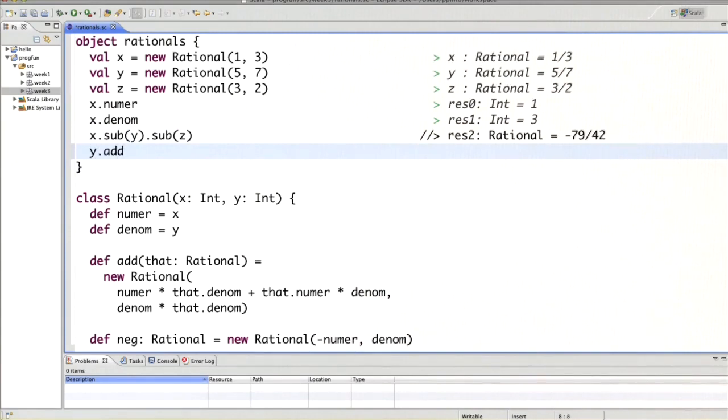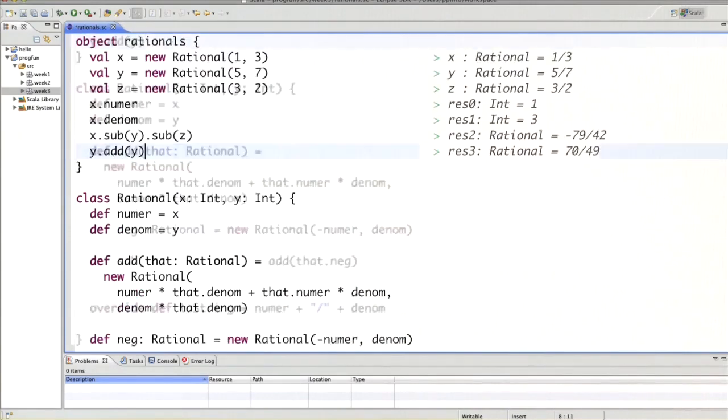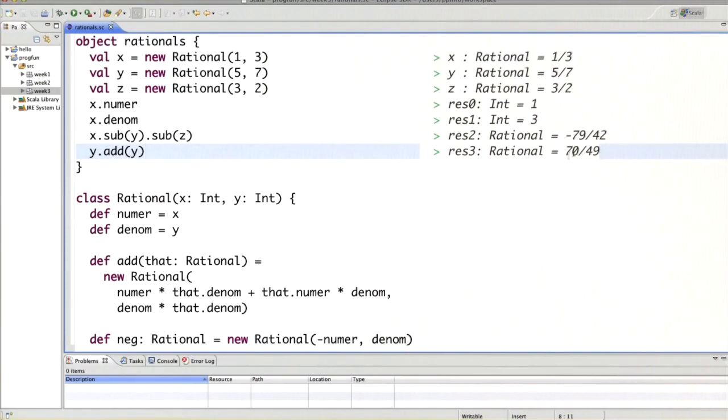We say y.add of y. What does that give? Well, it gives us 70 over 49. What you've seen here is that that's a number that's not as simple as possible. I would have expected a simpler number, namely 10 over 7.